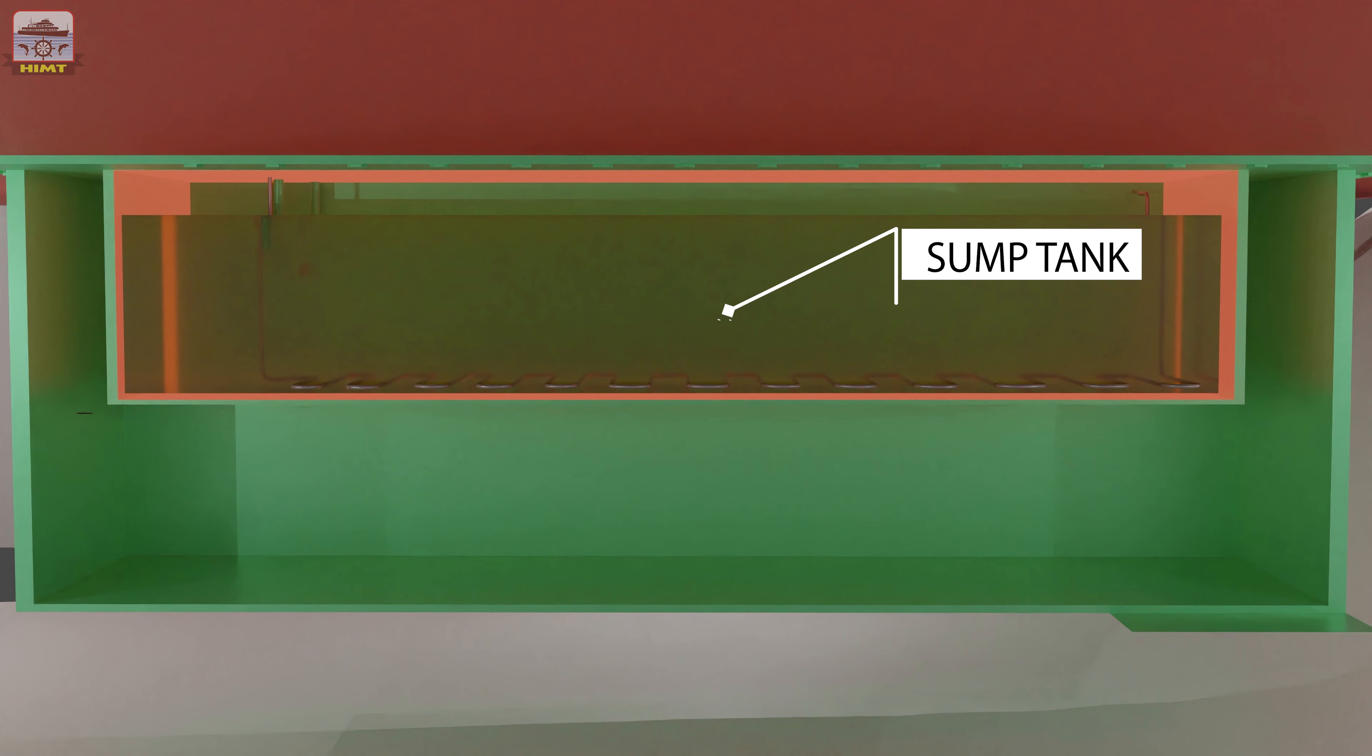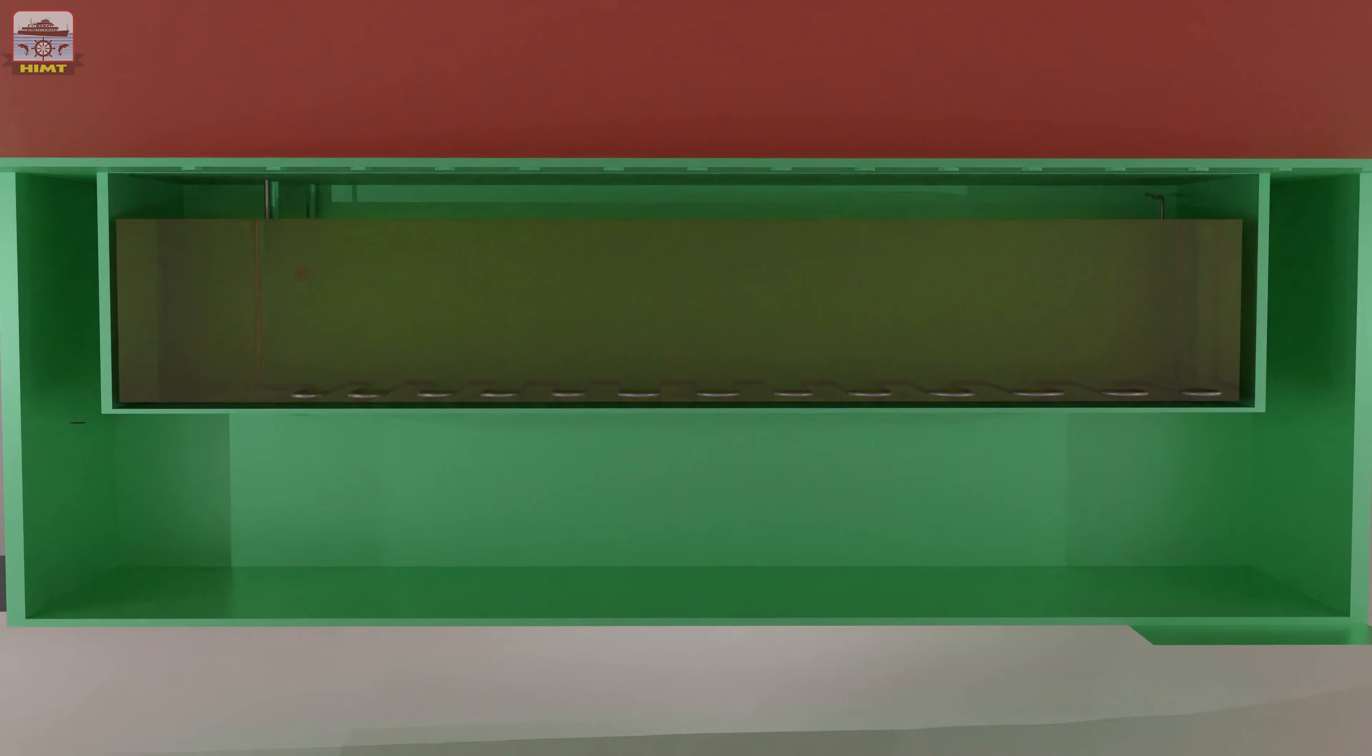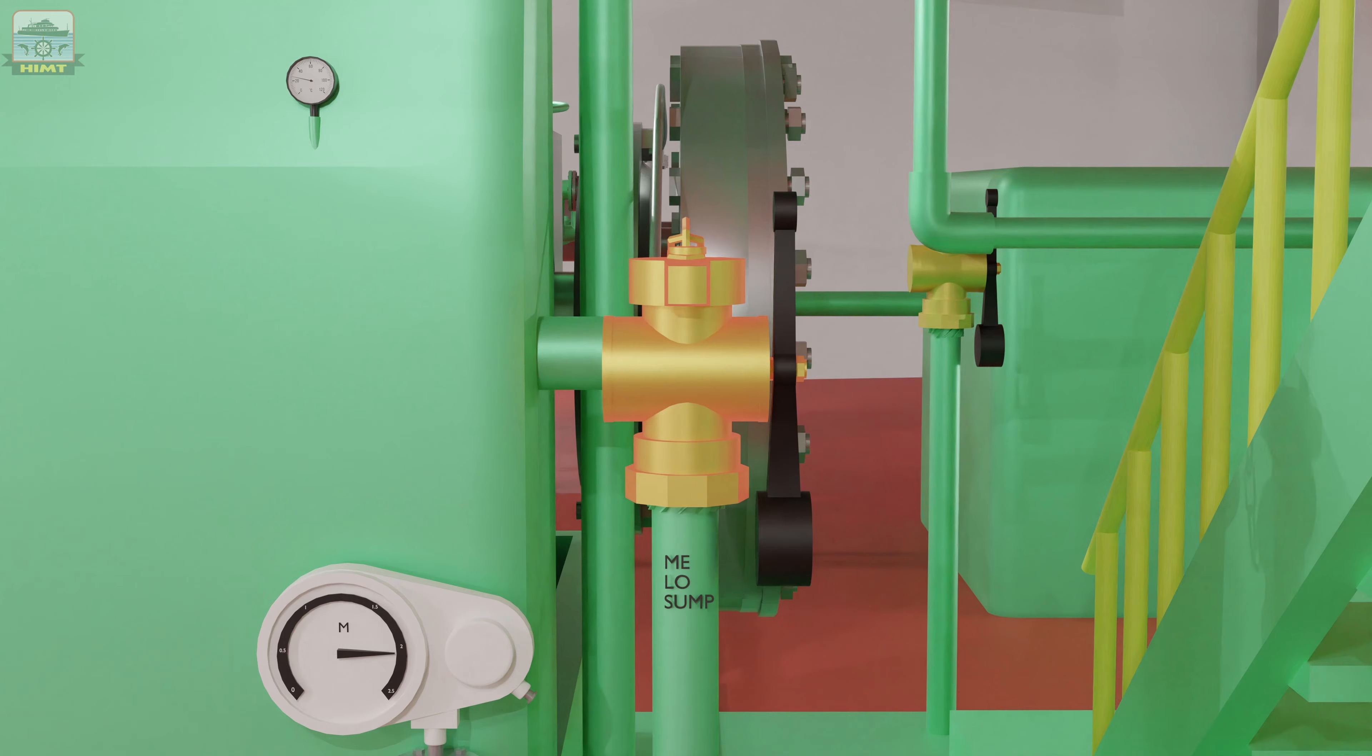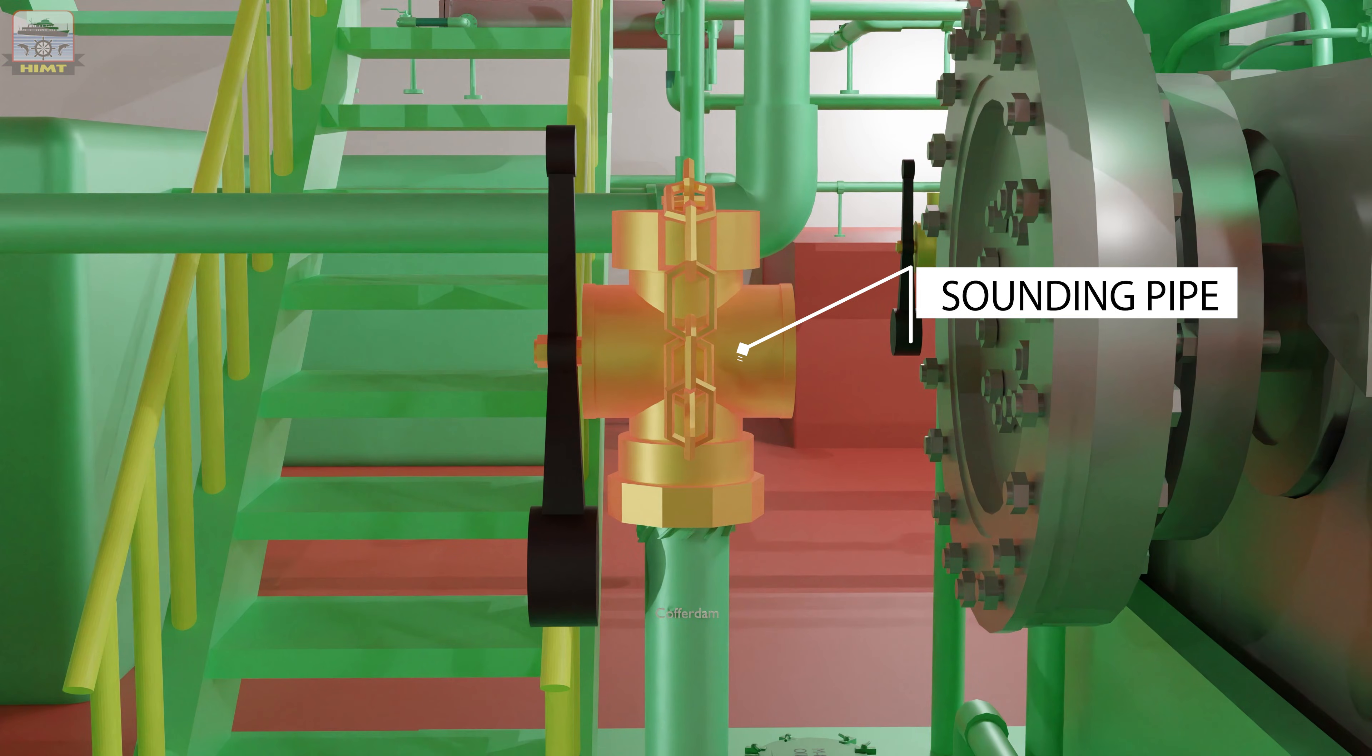The main engine lube oil sump tank is located under the engine in the double bottom and is surrounded by cofferdams. A sounding pipe to know the level of lube oil in the sump is provided. A sounding pipe is also provided for the cofferdam to detect any leakage of oil from the sump. Cofferdams need to be inspected regularly to check for signs of leakages.